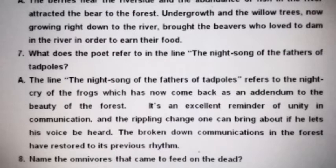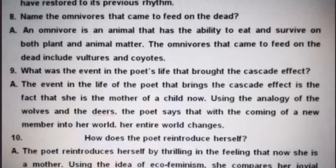Question 8: name the omnivores that came to feed on the dead. An omnivore is an animal that has the ability to eat and survive on both plant and animal matter. The omnivores that came to feed on the dead include vultures and coyotes.